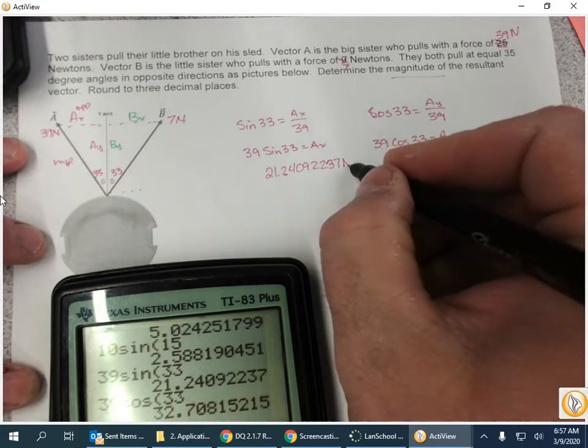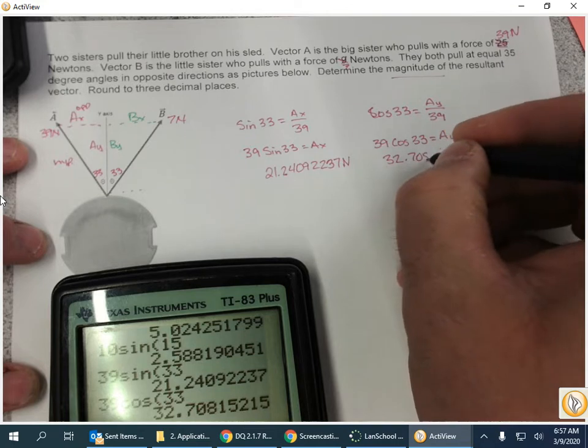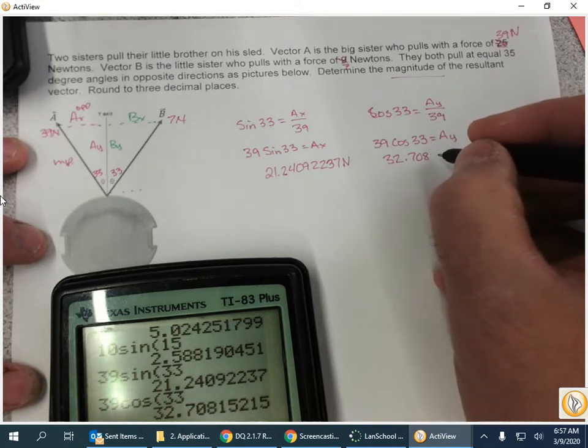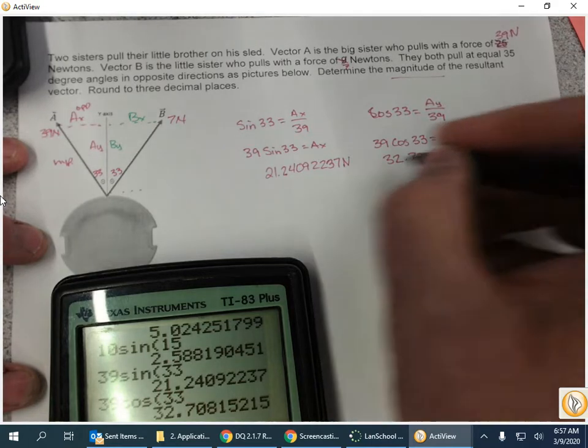And 39 cosine of 33, that is in newtons, is 32.70815215 newtons is my Ay and my Ax.